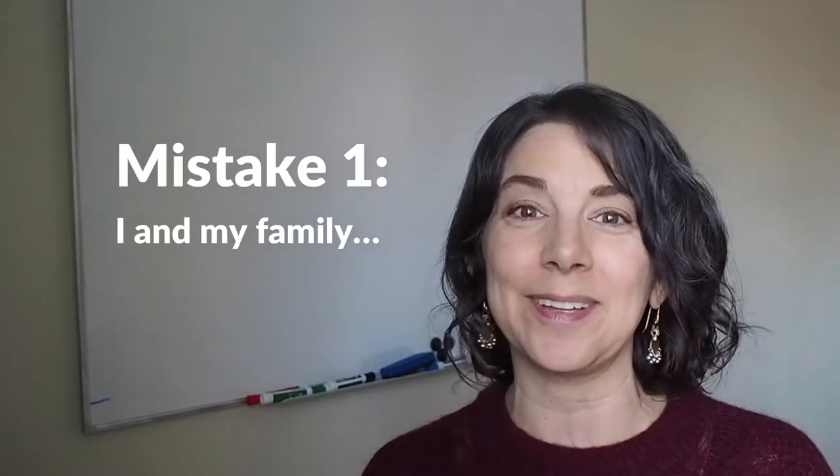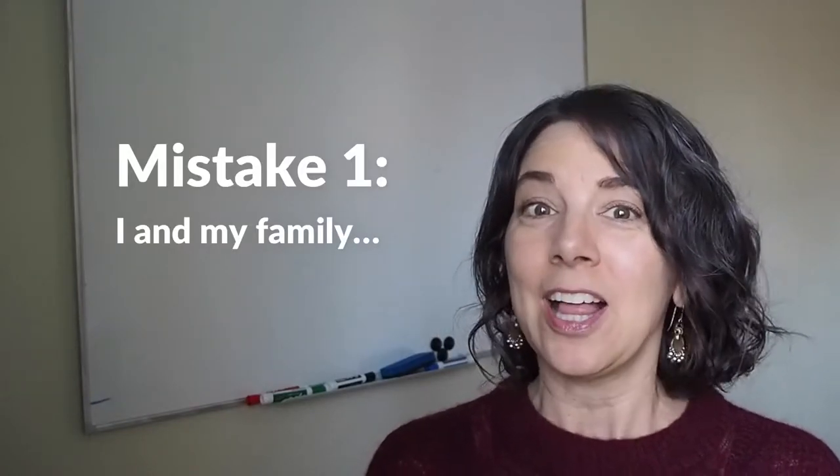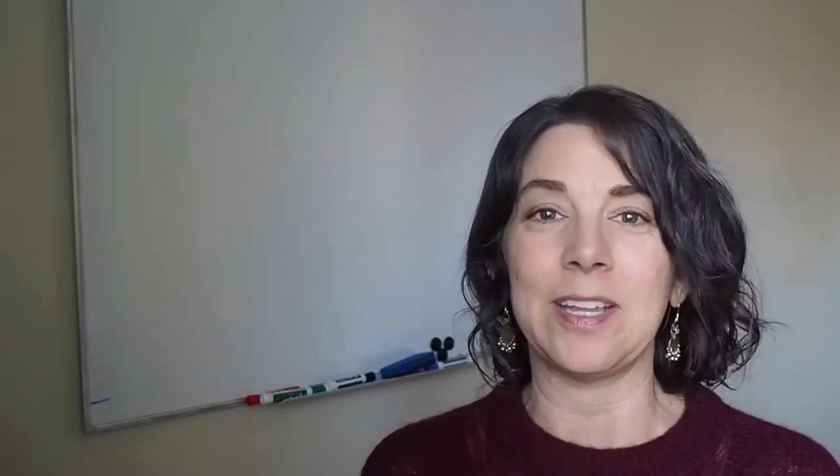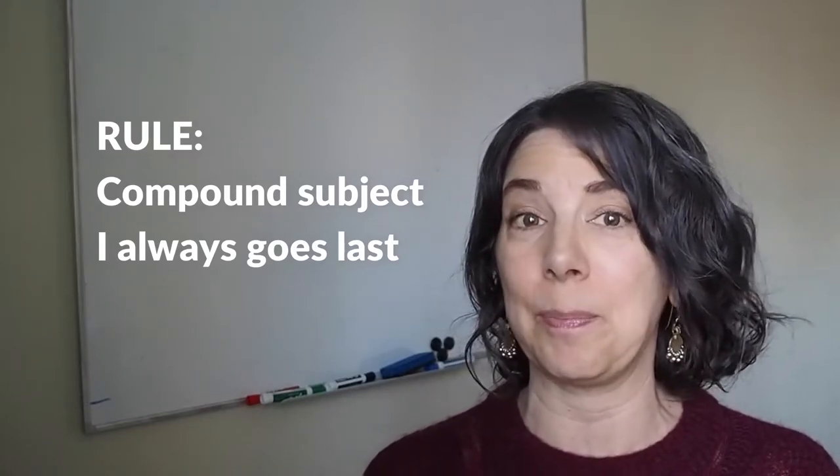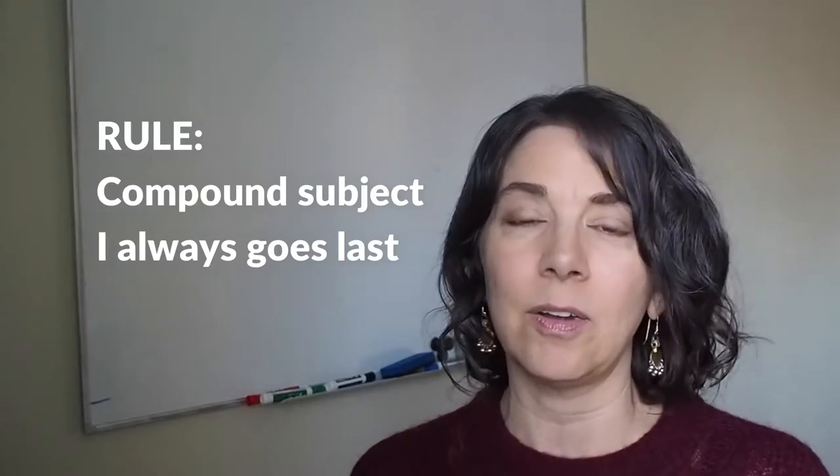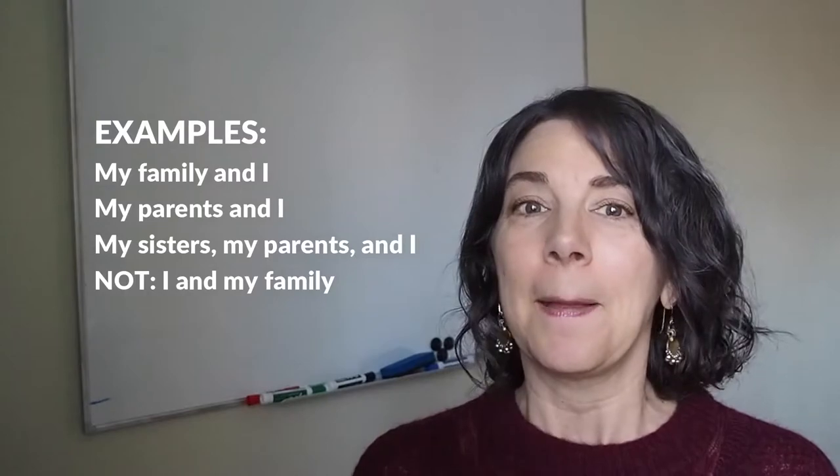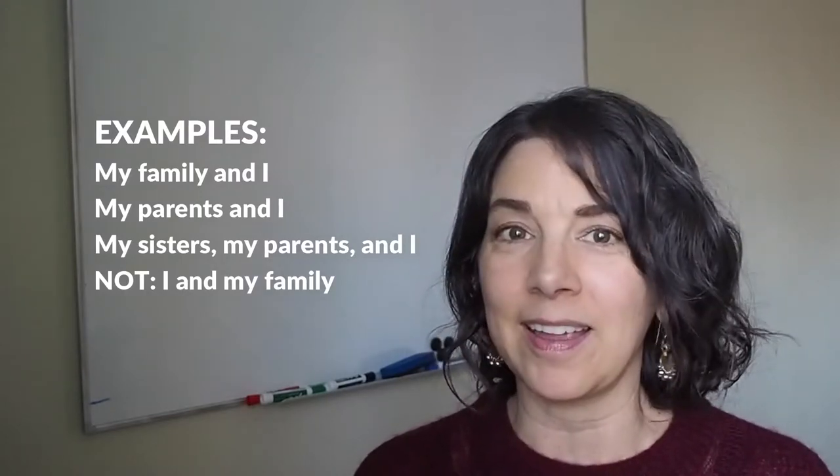Number one: I and my family. For example, I and my family love to go to the park on the weekends. I and my friends enjoy watching movies together. So I and my family or I and my friends or I and my parents is wrong. The reason is that in English, if you have a compound subject, which is a subject that has two or more parts, I always goes last. I'm not totally sure why that is, but that's how it is. So try to remember to say my family and I, my parents and I, my friends and I.